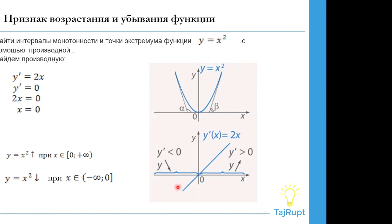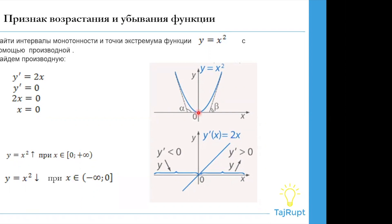Вычисляем производную y равно x квадрат, и производная будет равна y равно 2x. В нижней части картинки мы видим график производной этой функции. Если мы приравниваем производную к нулю, то мы всегда будем находить точки экстремума — это точки максимума, минимума. Вот мы приравняли производную к нулю и получили, что x будет равен нулю. При x равном нулю y также будет равен нулю. Это означает, что точка (0, 0) будет являться точкой минимума или экстремума — в данном случае минимума.